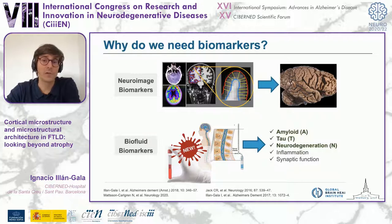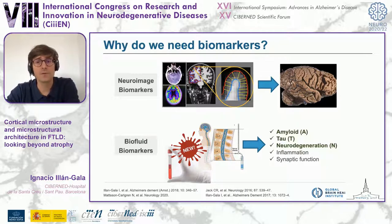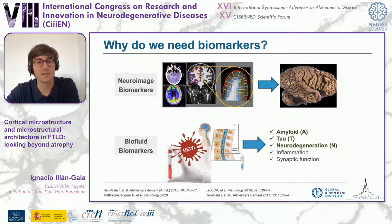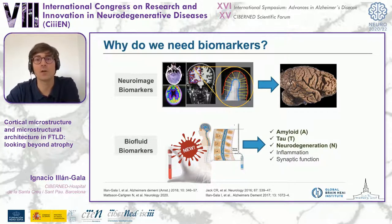Biomarkers may also be useful to track disease progression — these are called staging biomarkers. In contrast, some biomarkers provide valuable information regarding the etiology, the cause of a given syndrome — like, for example, Alzheimer's disease biomarkers. By the end of this talk I hope to persuade you that my latest research challenges the traditional dichotomy between topographic and etiological biomarkers.